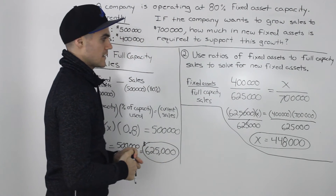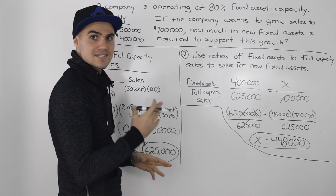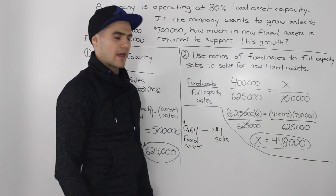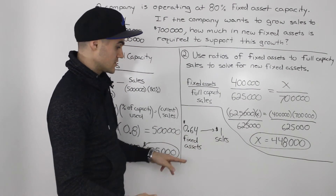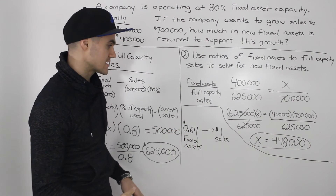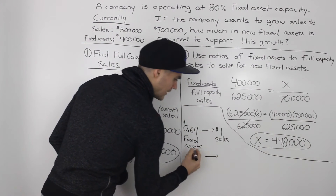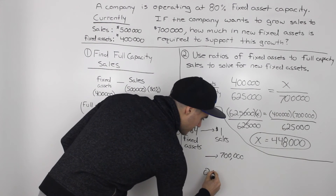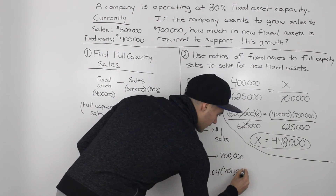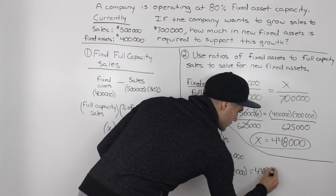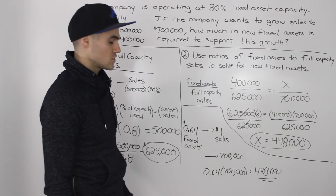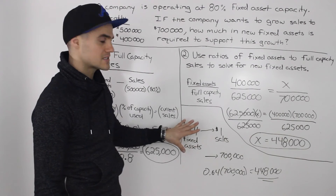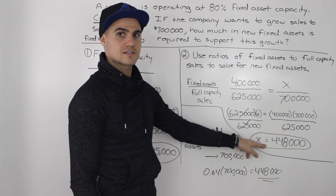Another way people like to do it is to calculate the ratio of fixed assets to full capacity sales separately first. If you take 400,000 and divide it by 625,000, you get 0.64. What that means is that to generate $1 worth of sales, you need 0.64 worth of fixed assets. Taking that ratio, we multiply 0.64 by 700,000 and get $448,000 — the same number. That's another approach your teacher may show. I personally prefer the ratio method because it lets you skip preliminary steps and calculate the new fixed assets figure right away.